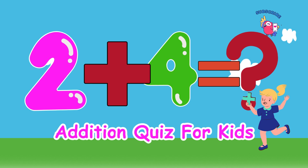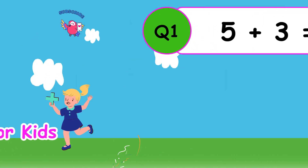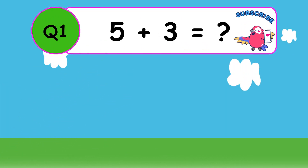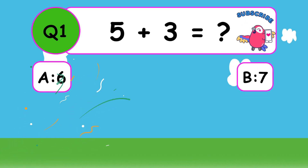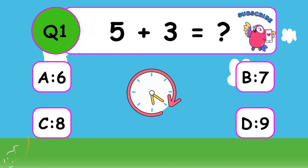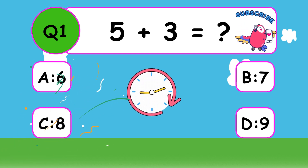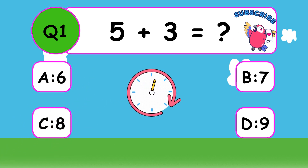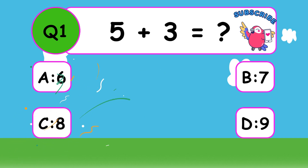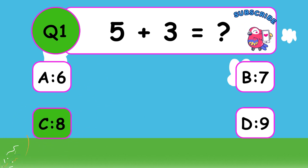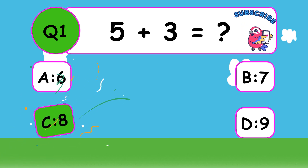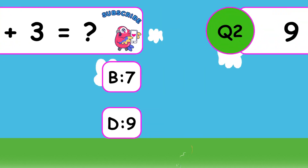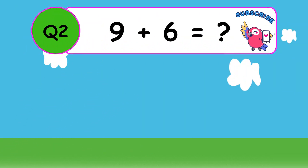Addition with multiple choice questions for kids. What is 5 plus 3? The correct answer is C, 8. 5 plus 3 equals 8.